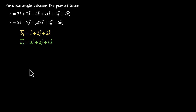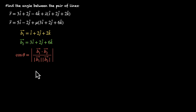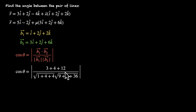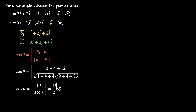The angle between these two lines is the angle between B1 and B2. So cos of theta equals mod of (B1 · B2) divided by the magnitudes of B1 and B2. The dot product is 1×3 + 2×2 + 2×6 = 3 + 4 + 12 = 19. The denominator is √(1 + 4 + 4) × √(9 + 4 + 36) = √9 × √49 = 3 × 7 = 21. So cos θ = 19/21, and theta = cos⁻¹(19/21). That's the angle between these two lines.